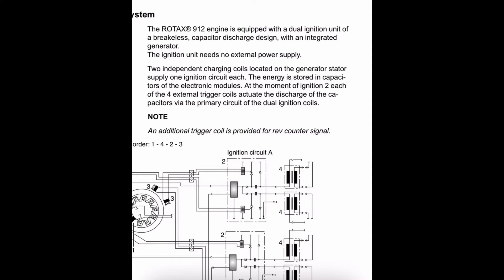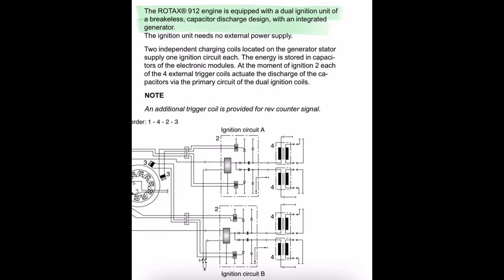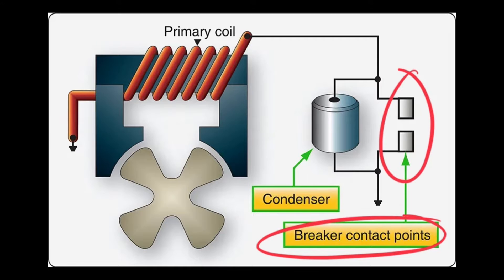And if we look at the description from the maintenance manual, we can read verbatim, the Rotax 912 is equipped with dual ignition unit of breakerless capacitor discharge design with an integrated generator. They mentioned breakerless because it does not use breaker points to collapse an alternating current that we're used to seeing in a magneto.